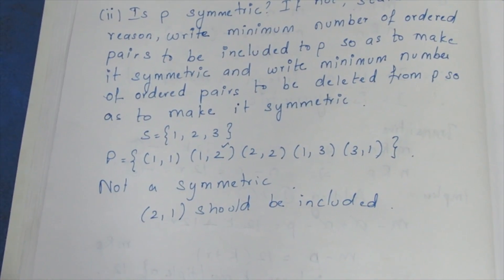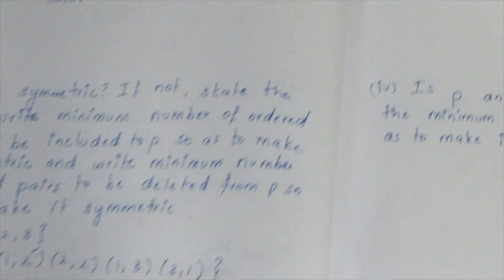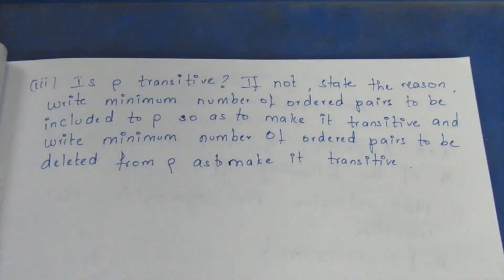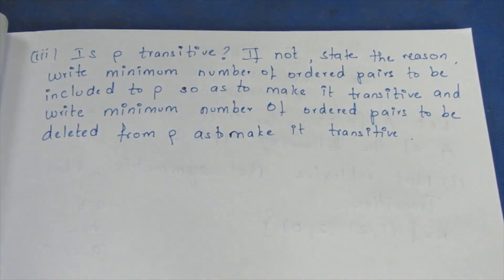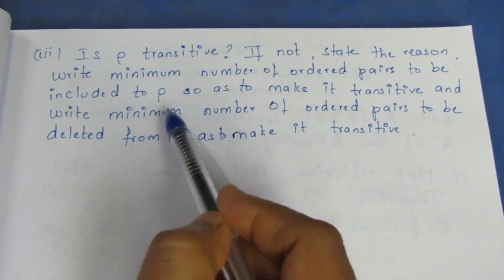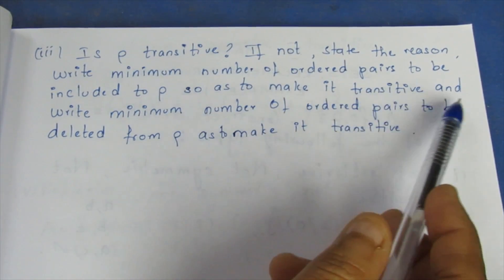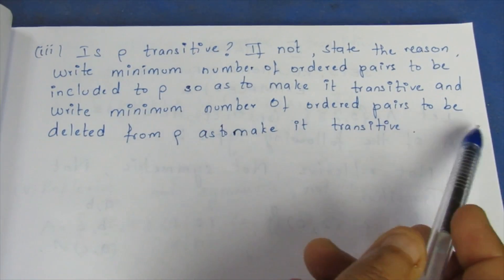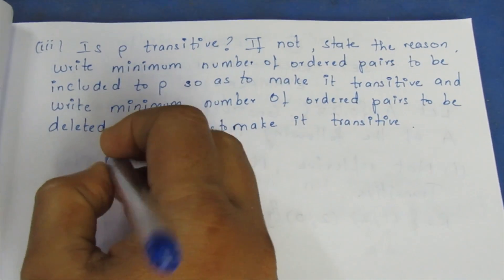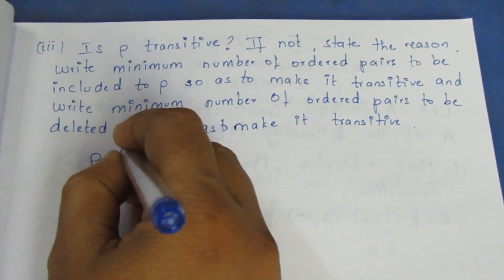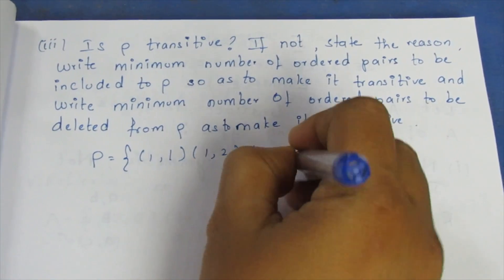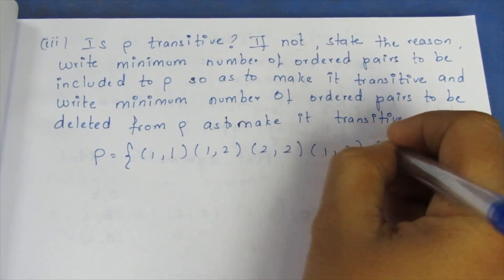Third question: Is P transitive? If not, state the reason. Write the minimum number of ordered pairs to be included in P so as to make it transitive, and write the minimum number of ordered pairs to be deleted from P so as to make it transitive. The value of P is: (1,1), (1,2), (2,2), (1,3), (3,1).